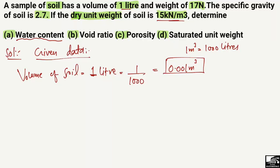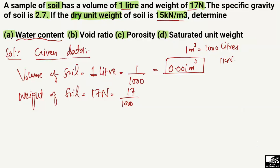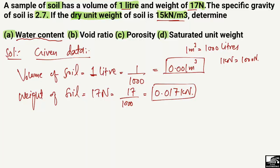The weight of the soil is 17 Newton. We divide by 1000 because one kilonewton equals 1000 Newton, giving us 0.017 kilonewton. So the weight of the soil sample is 0.017 kilonewton.